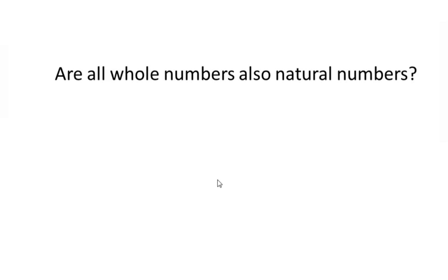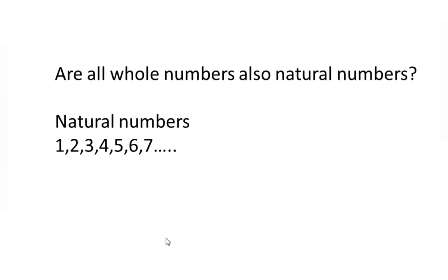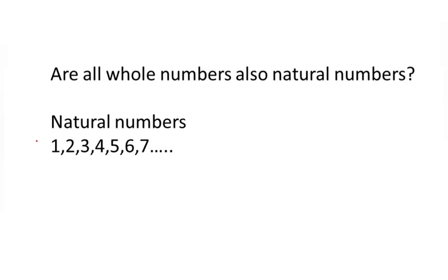Next question: are all whole numbers also natural numbers? Natural numbers start from 1 — 1, 2, 3, 4, 5, 6 and so on — and do not include 0. Whole numbers include 0, but natural numbers do not include 0. So all whole numbers cannot be natural numbers. Since 0 is included in whole numbers but not in natural numbers, we cannot say that all whole numbers are natural numbers.